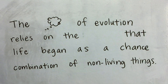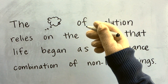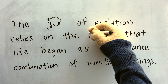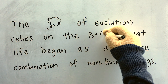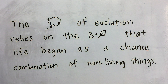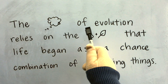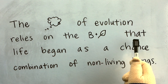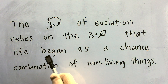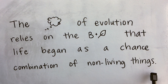Now let's change the word belief to the letter B and a picture of a leaf. Let's say that again: The theory of evolution relies on the belief that life began as a chance combination of non-living things.